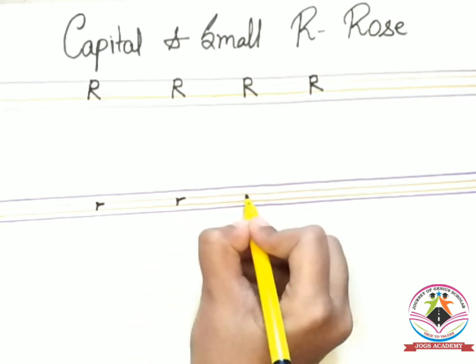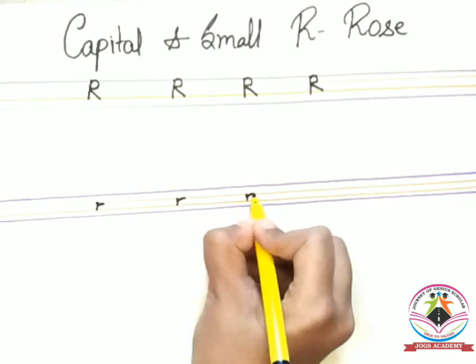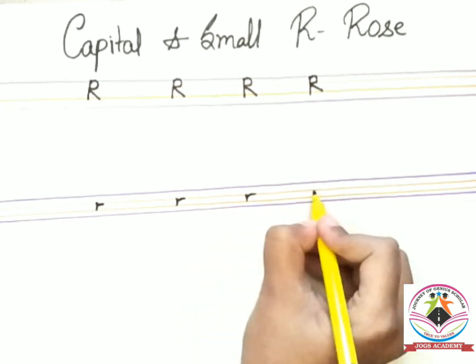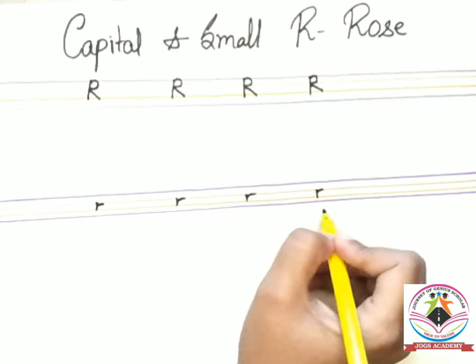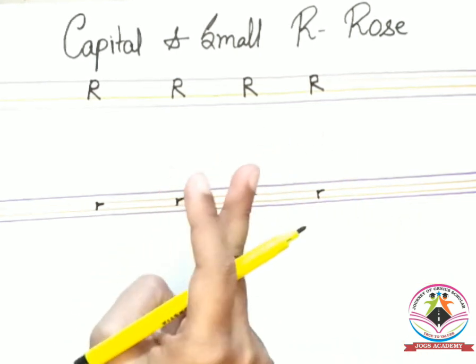Again standing line and sleeping line like this. Again standing line like this. Two types. We can draw a small R.